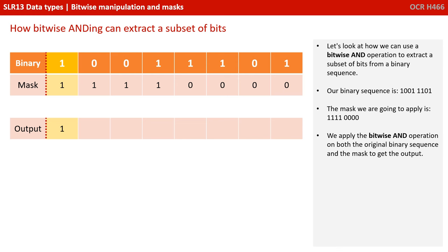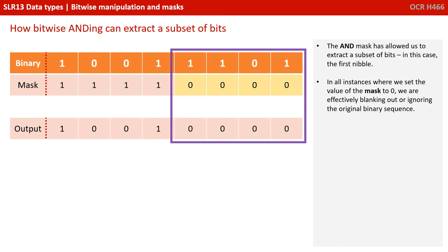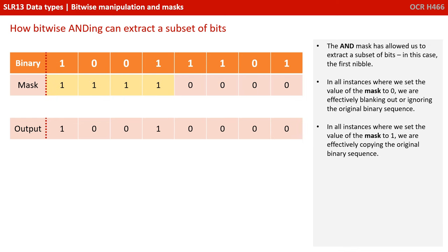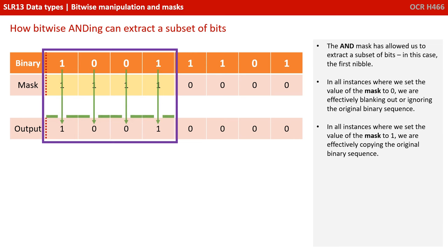Working through the AND operation: 1 AND 1 is 1; 0 AND 1 is 0; 0 AND 1 is 0; 1 AND 1 is 1; 1 AND 0 is 0; 1 AND 0 is 0; 0 AND 0 is 0. The AND mask has allowed us to extract a subset of bits — in this case, the first nibble, the first 4. Where we set the mask to 0, we're blanking out or ignoring the original binary sequence. Where we set the mask to 1, we're effectively copying the original binary sequence.